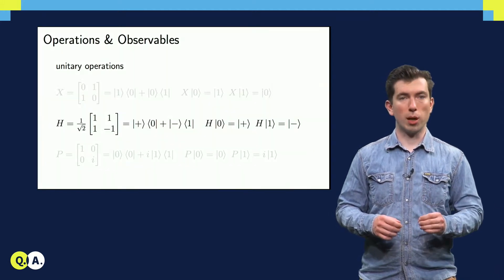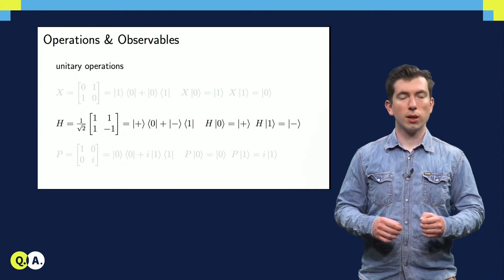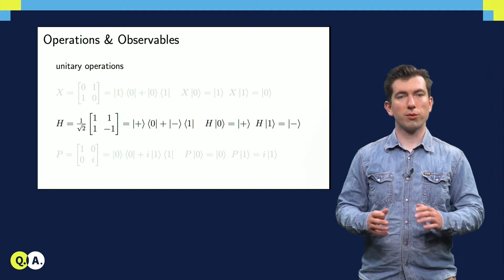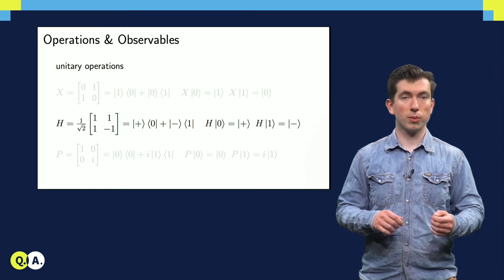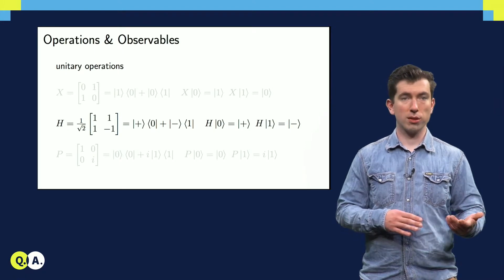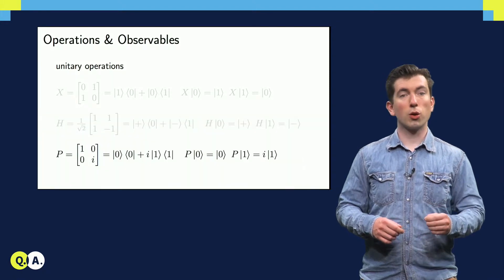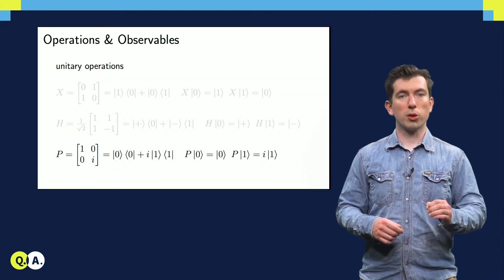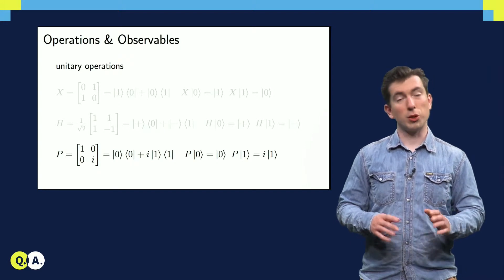Now let's take a look at a more interesting operation, the Hadamard gate H. As you can see, this changes the basis from the 0-1 basis to the plus-minus basis that we discussed earlier. Put in a 0, get out a plus. Put in a 1, get out a minus. There's another gate, called the phase gate, which only multiplies the one state by a factor of i, changing the basis in a very subtle way.